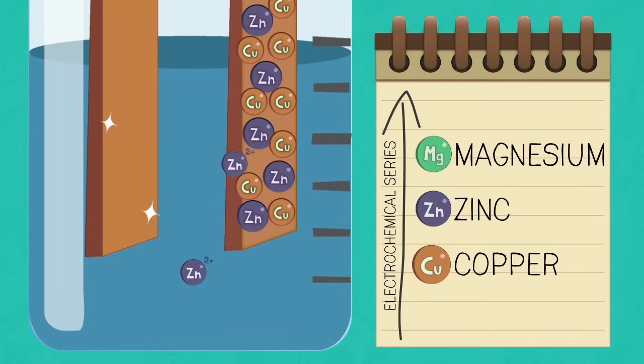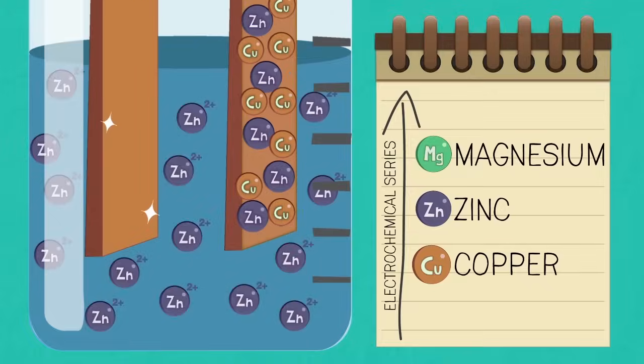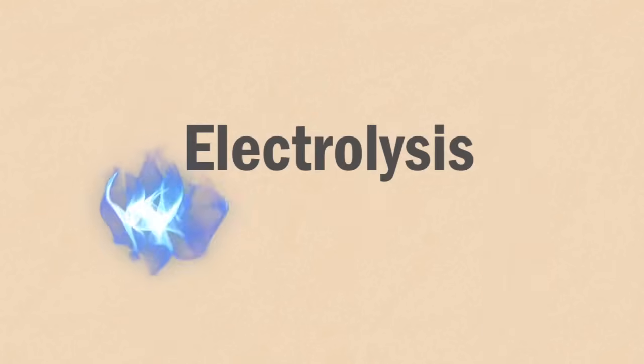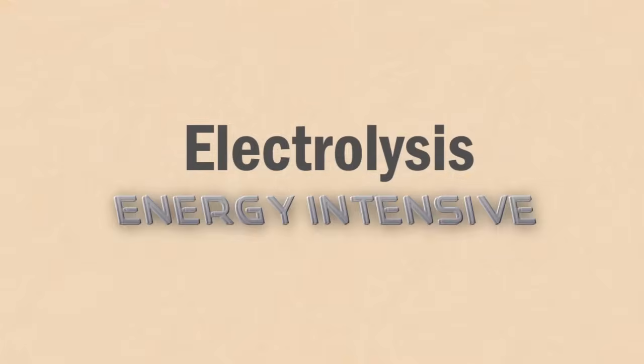In summary, copper is purified by electrolysis, an energy intensive process. A direct current is passed through a cell containing an electrolyte, an impure sheet of copper at the anode, and a pure sheet at the cathode.